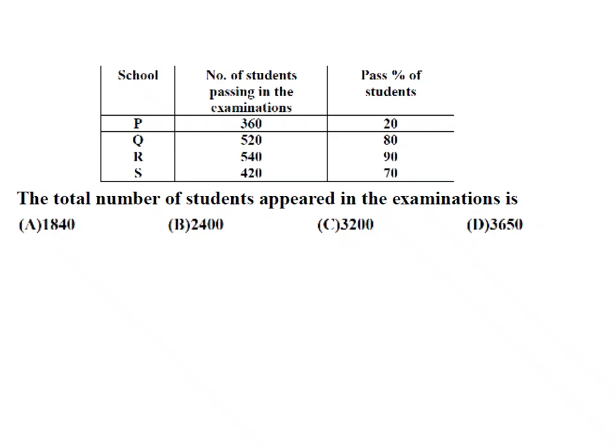Pass percentage is also given. The meaning is 20% is 360, 80% is 520, and so on. He is asking you the total number of students appeared in the examination. If 20% is 360, then 10% is 180, which means total members is 1800 in school P. 80% is 520 means 20% becomes 130. So 20% is 130, add 20% to this, it becomes 650.